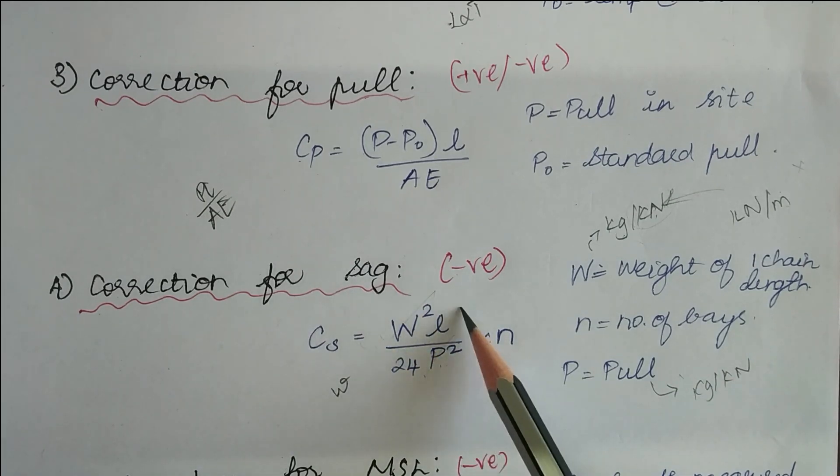This unit has to be equal to this unit. Only then this will cancel out and you will get your answer. N has no unit and only then you will get your answer in, the length unit is meter. Only then you will get the answer in meter. So the correction has to be in meters. So this is how you do the correction for sag and it is always negative.